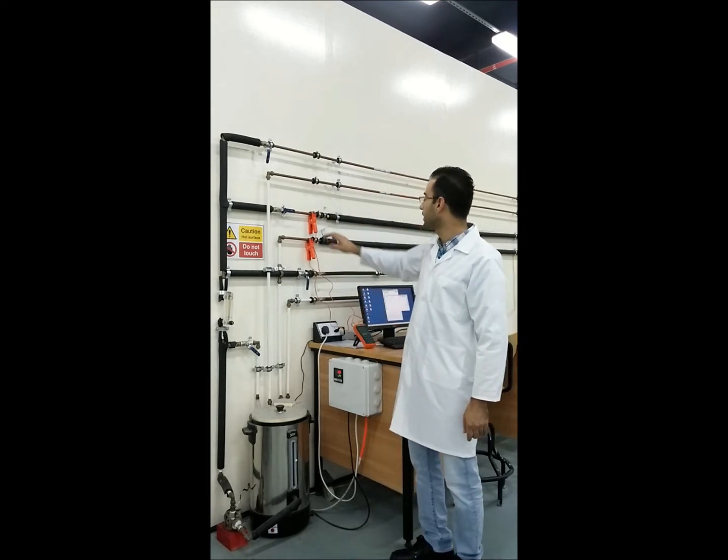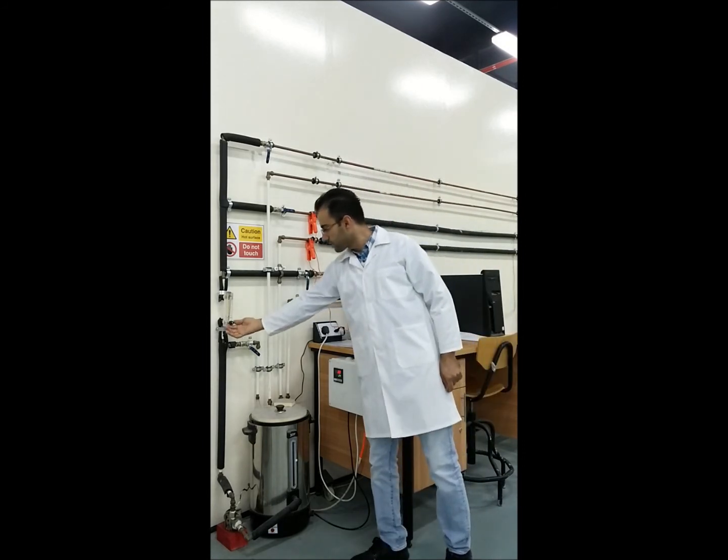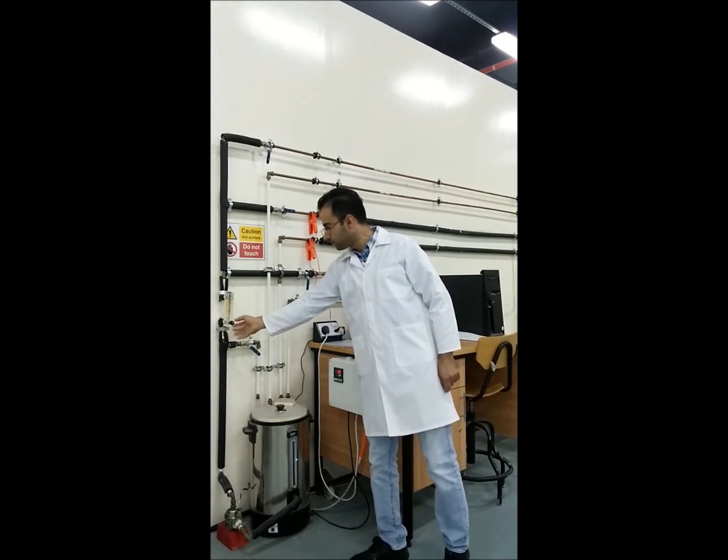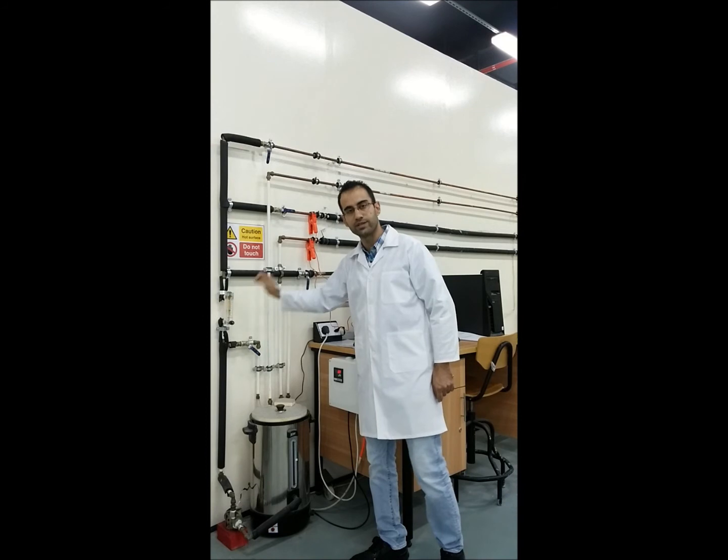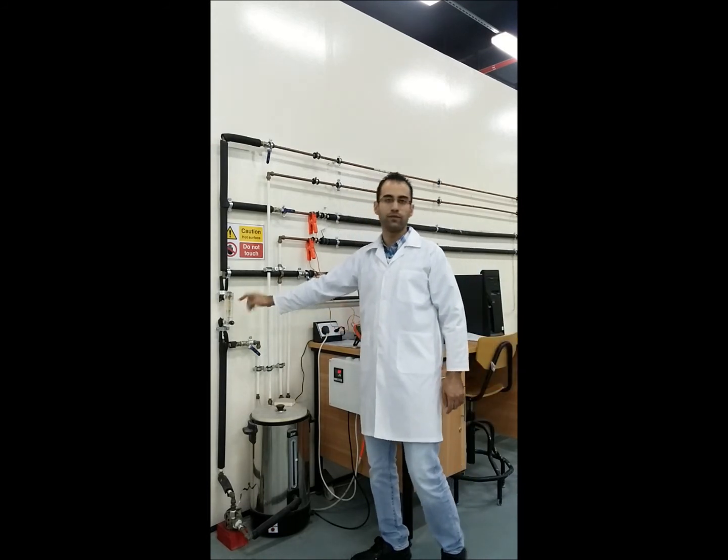Now all the flow we are getting through the lagged pipe in this case and using this flow meter we can control how much flow is going. Always we read the LPM side of this flow meter.